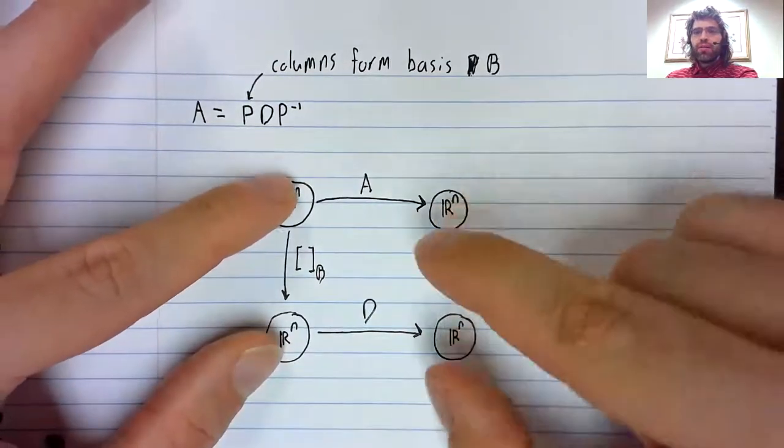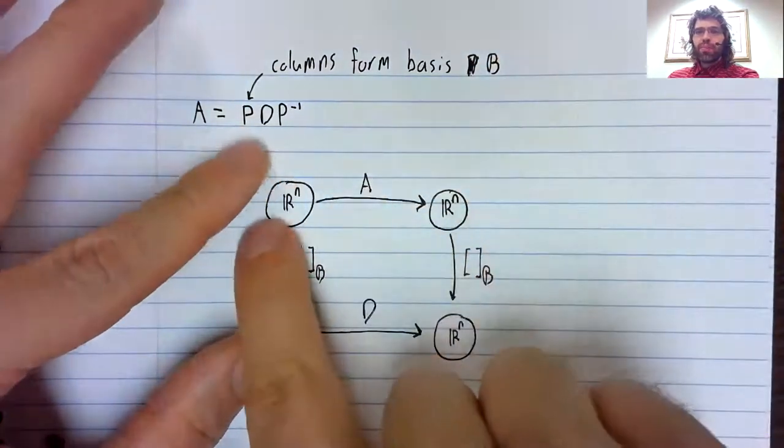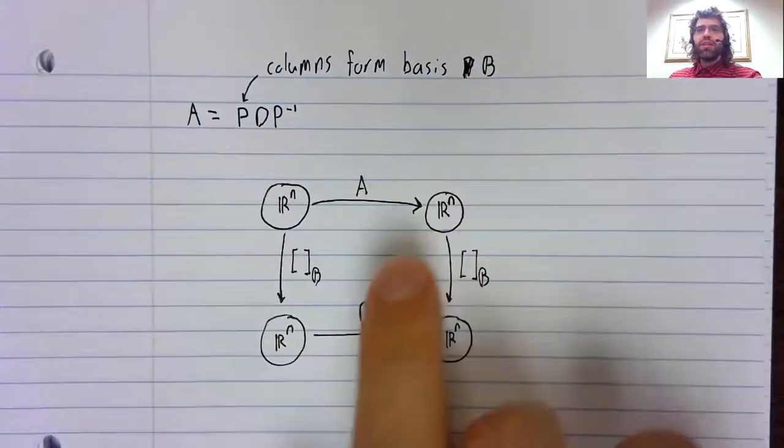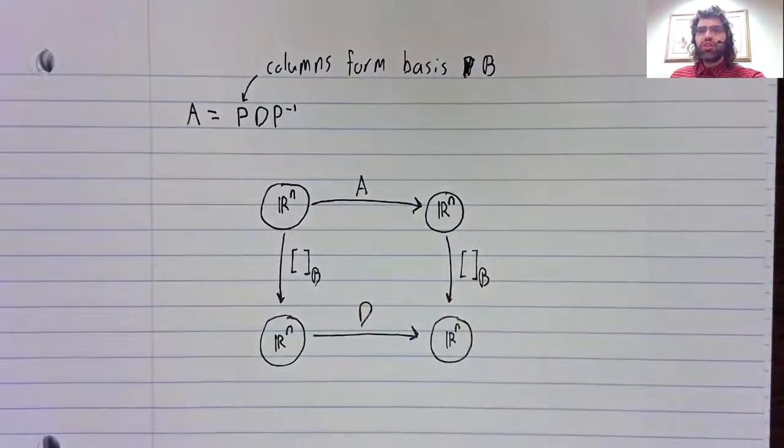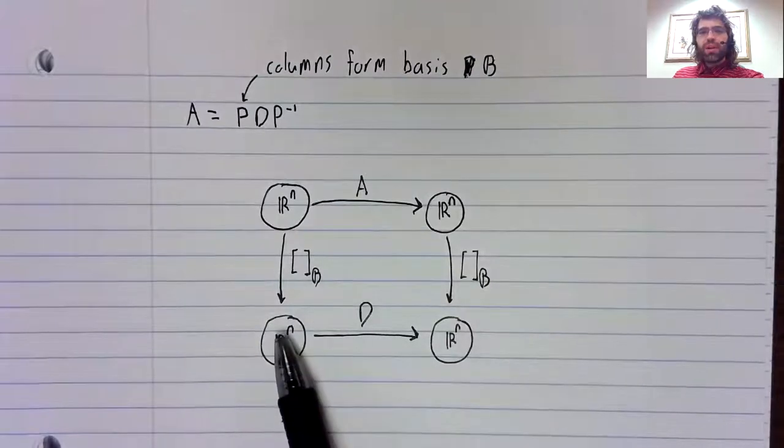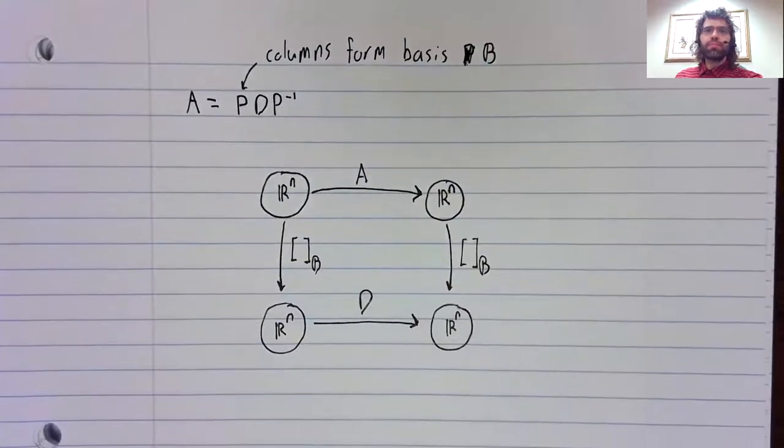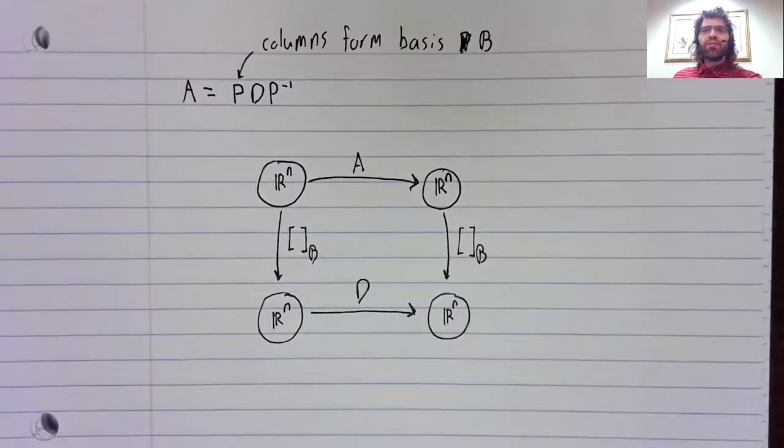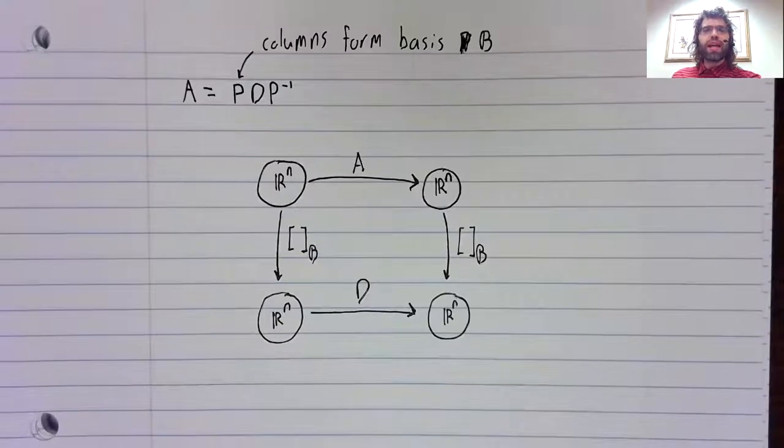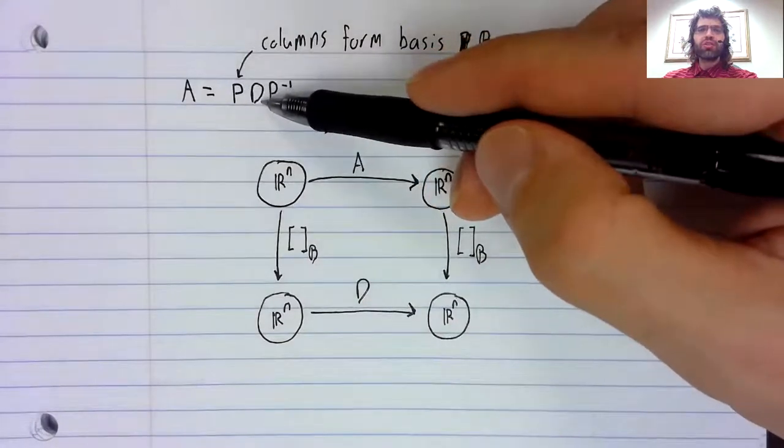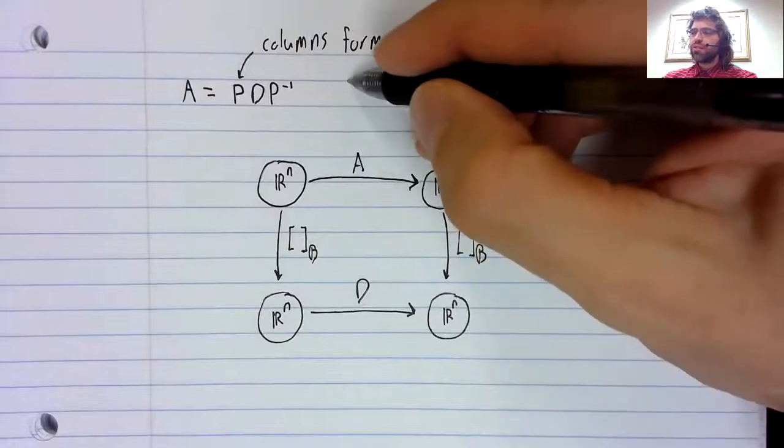And this mapping from here to here is the isomorphic image, as it were, of this mapping from here to here. Now, I said that was true for diagonal matrices, because that's the context where we've seen a factorization that looks like this.